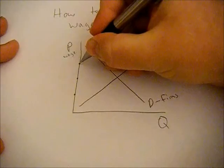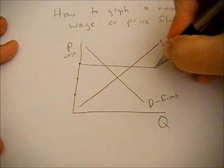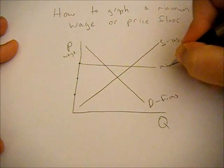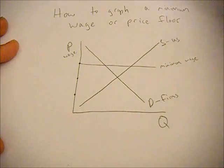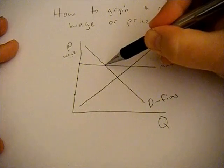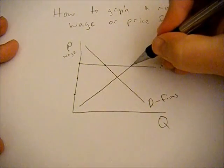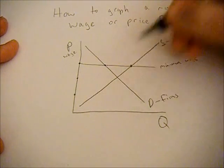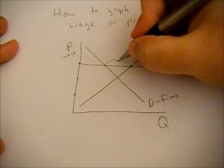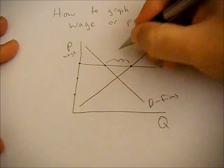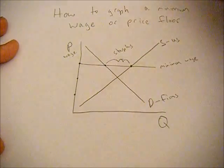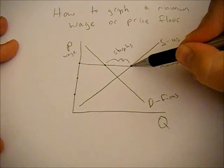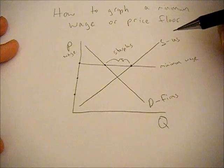There are three different outcomes. We could have a minimum wage above the equilibrium wage and in that case firms would only demand this much labor while people would be willing to supply this much and that would end up with a surplus in the market because quantity supplied is greater than quantity demanded.